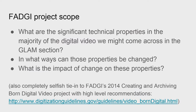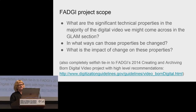We looked at this and thought: what's missing from this list, and what is the context of these different data points? What does this mean when talking about image streams, for example? The FADGI project asks: what are the technical characteristics we want to look at specifically in the GLAM sector — galleries, libraries, archives, and museums — in what ways can those properties change, and what's the impact of that change? There's also a tie-in to a 2014 FADGI project on creating and archiving born digital video.